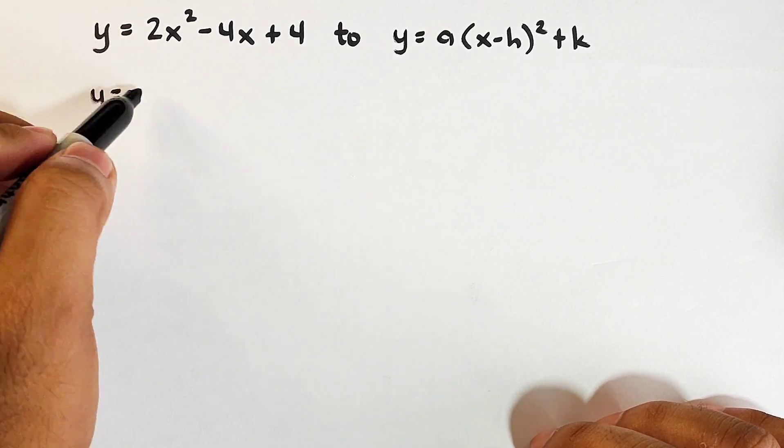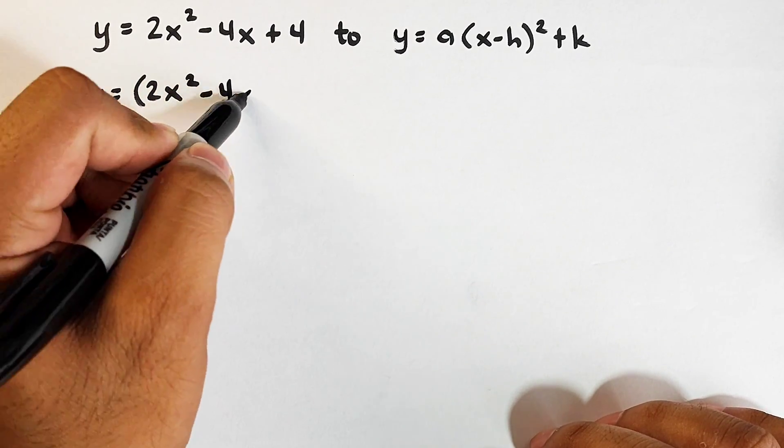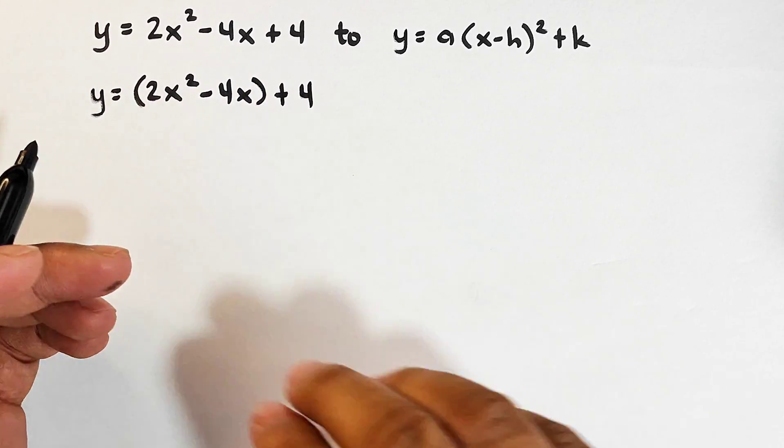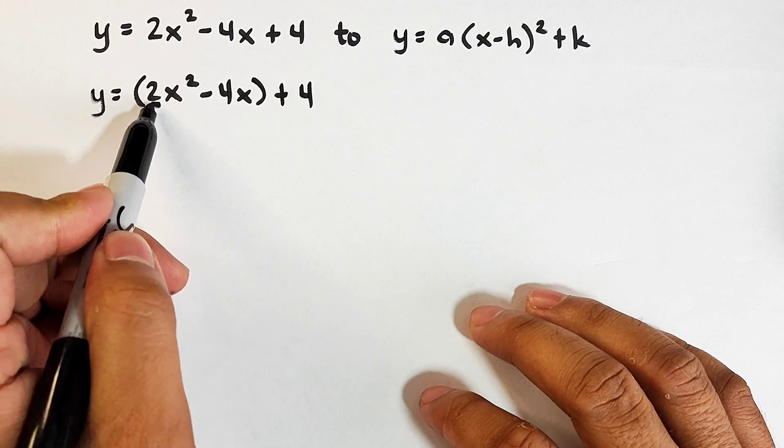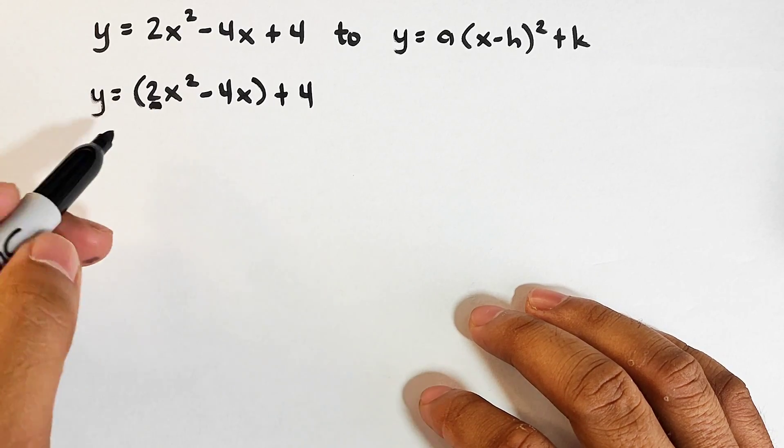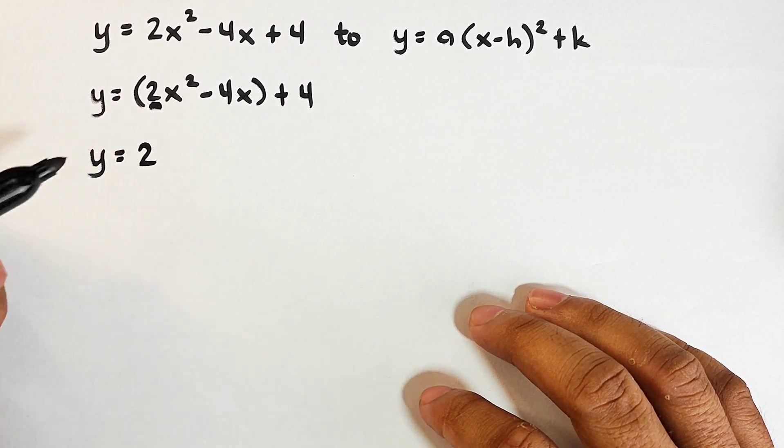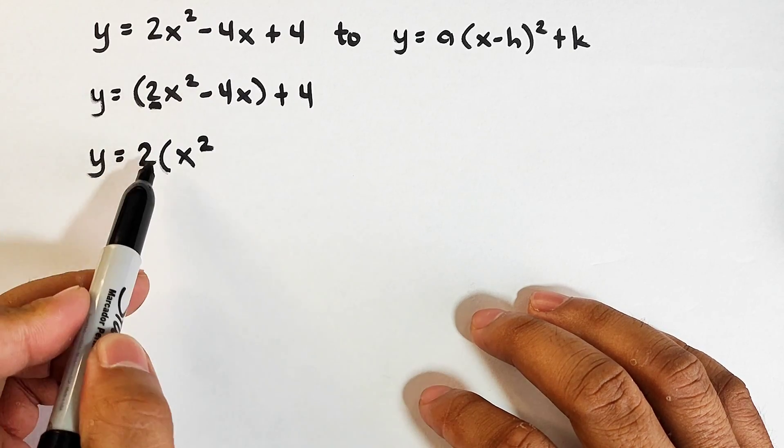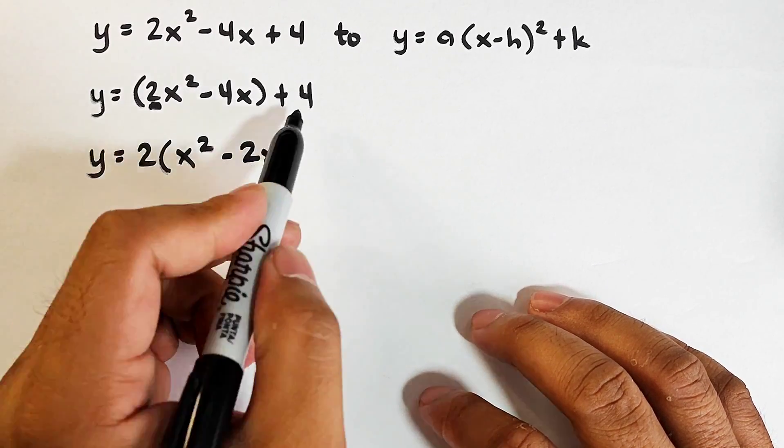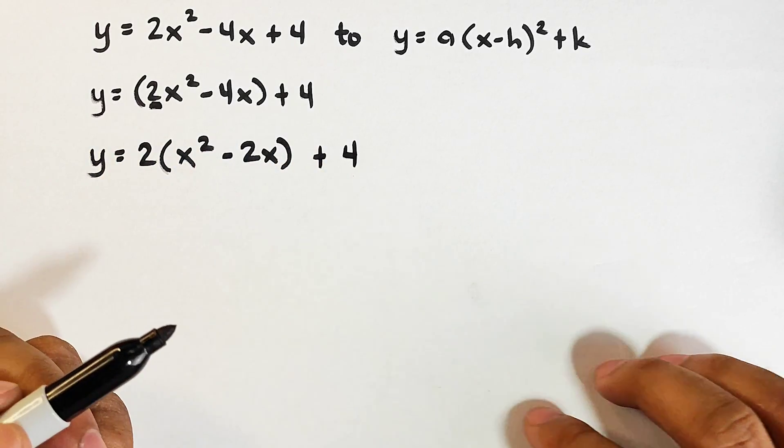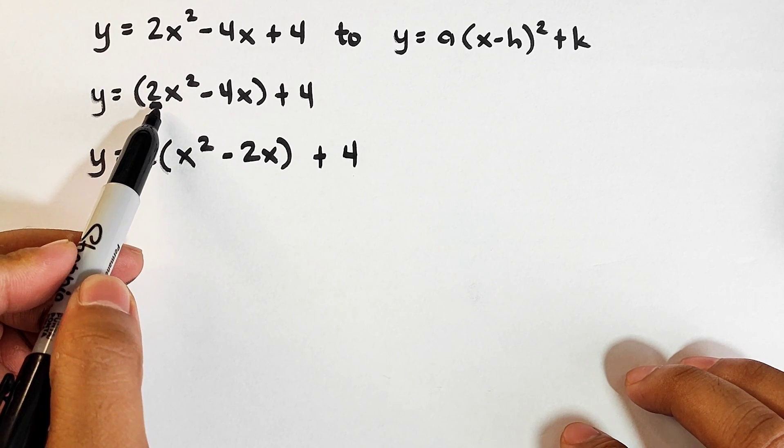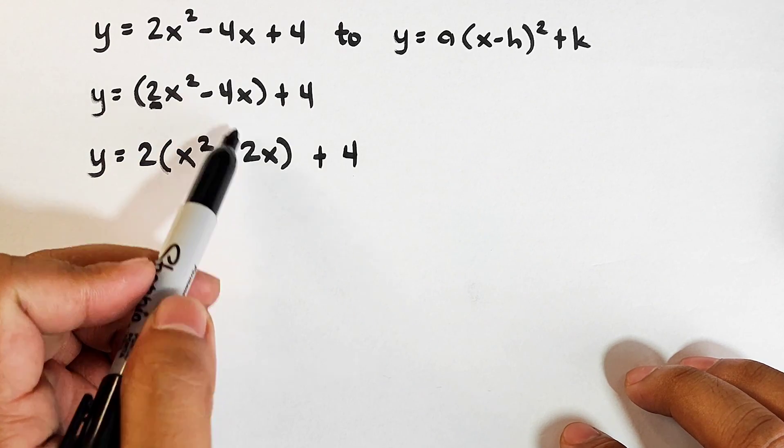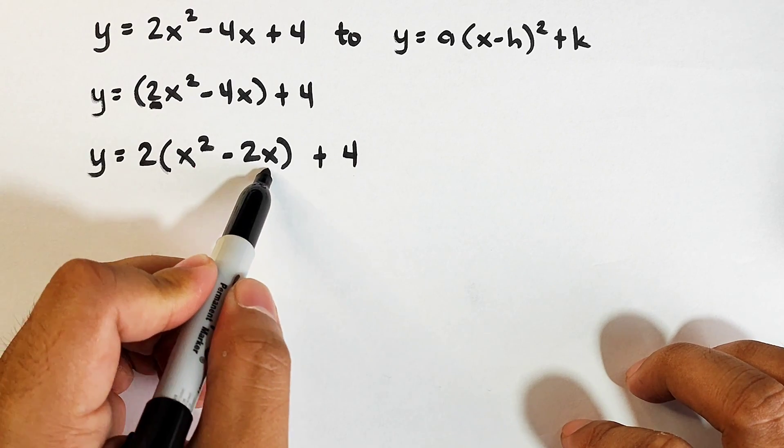So what we need to do here is to regroup first. So we have y equals the quantity of 2x squared minus 4x plus 4. After regrouping it, regroup natin yung terms with x variable, i-factor out natin yung value ng A. Okay? Factor out natin for these two terms. So it will become y equals 2. Ilabas natin yung 2 times 2x squared divided by 2 is x squared. Then negative 4x divided by 2 is negative 2x.